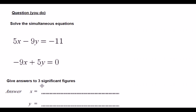Okay, so have a go at solving these simultaneous equations using the same solver, giving it to three significant figures, and using exactly the same method. So 5X minus 9Y equals minus 11, minus 9X plus 5Y equals 0.